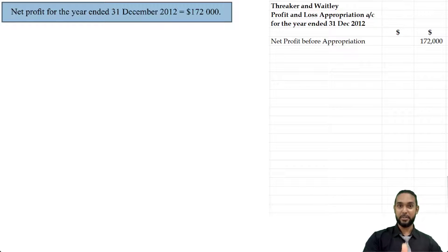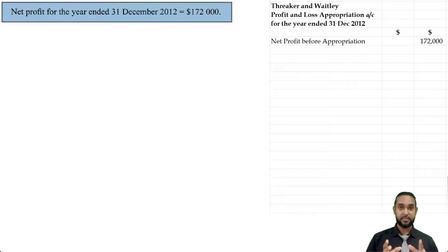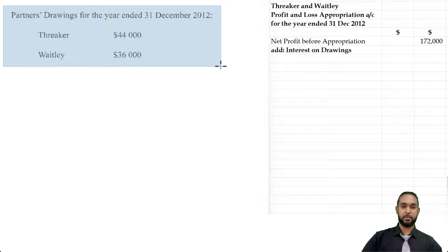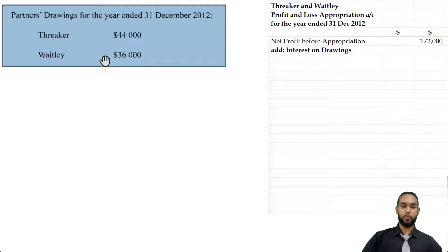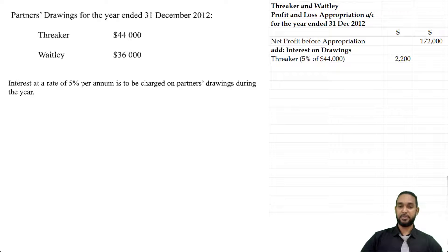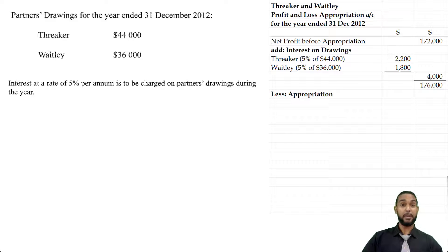Before we go any further, if you are not familiar with partnership appropriation accounts, I'm going to put a card up there and a link in the description below, so be sure to check that out. If you are comfortable with appropriation accounts, let's proceed. The next thing we have to do is add the interest on drawings. The partners' drawings are $44,000 for Threka and $36,000 for Waitly, and the interest rate is 5% per annum. So we multiply 5% by $44,000 for Threka and 5% by $36,000 for Waitly, then add those two figures together to get a subtotal of $4,000, which is added to the net profit before appropriation to give us $176,000 to be appropriated between the partners.